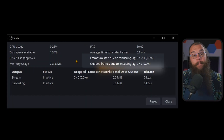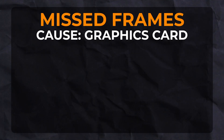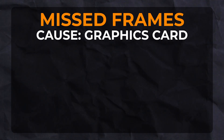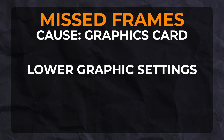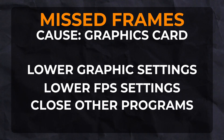The interesting part for us are the missed and skipped frames. These are both caused by your graphics card, but in very different ways. Missed frames are the frames that your graphics card could not render in time. This usually means that your game is asking too much from your PC, and you can choose to lower the quality in the game a little, restrict the frames in the game itself, or close out other programs that you might be running.